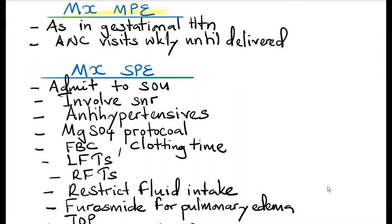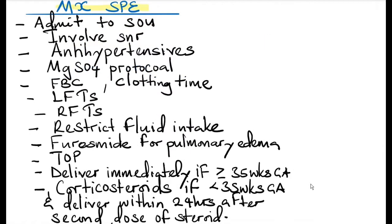Management of mild preeclampsia: manage as gestational hypertension as above, ensuring these patients come for antenatal care every week until delivery. For severe preeclampsia, admit to the special observation unit, involve your senior, and put the patient on antihypertensives — labetalol, methyldopa, or nifedipine. If the diastolic blood pressure is more than 110, give hydralazine until the diastolic reduces to less than 110. Start the patient on magnesium sulfate, as magnesium sulfate prevents eclampsia.